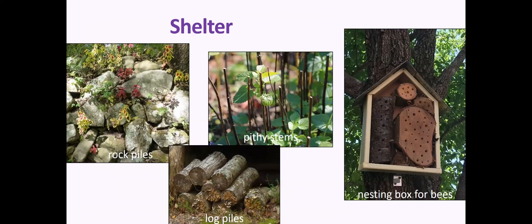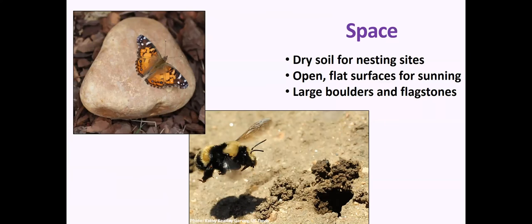For space: dry soil for nesting sites is important — bumblebees nest underground. I notice in my garden areas where I don't put mulch at all or very little, I do have bees coming in and out nesting there. Open flat surfaces for sunning, such as boulders or flagstones, are also useful. So we can provide the food, water, shelter, and space needed for a well-rounded, whole pollinator habitat.